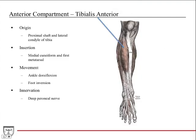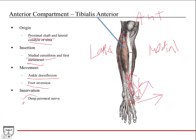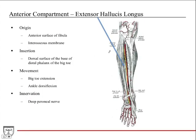The tibialis anterior is a broad muscle in the anterior portion. Its origin is the proximal shaft and lateral condyle of the tibia. Its insertion is the medial cuneiform and the first metatarsal — the tendon curves and wraps under the surface of the foot to attach to these bones. It is the main ankle dorsiflexor, pulling the foot upward. It also does foot inversion, making the sole of the foot point medially. Innervation is the deep peroneal nerve.